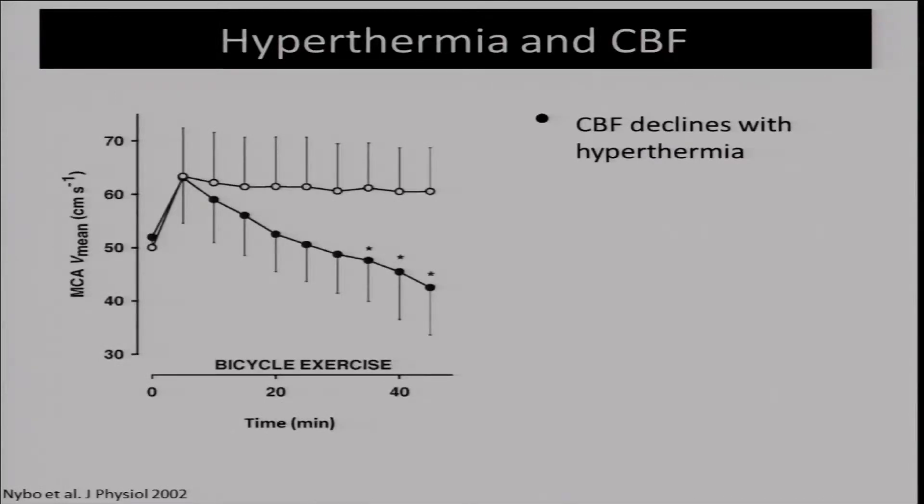Just to show that during exercise with hyperthermia, cerebral blood flow, as indicated by declining mid-cerebral artery velocity, declines with progressive exercise. Whereas in control conditions where you're in a cool, normal thermic environment, mid-cerebral artery velocity is maintained fairly level.